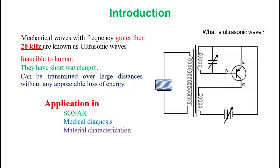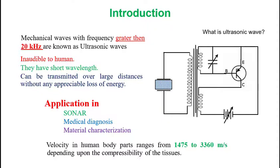The ultrasonic waves have their speeds inversely proportional to the compressibility of the material. And so their speeds are different in different materials. For example, in human body parts, their speed ranges from 1475 to 3360 meter per second. Therefore, it becomes crucial to know the speed of ultrasonic waves in any medium for their use. In this experiment, we will find the same in kerosene oil.